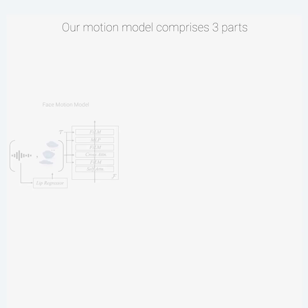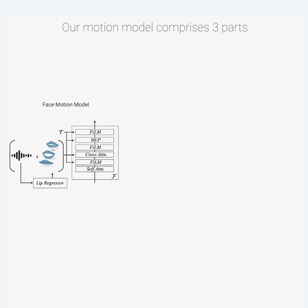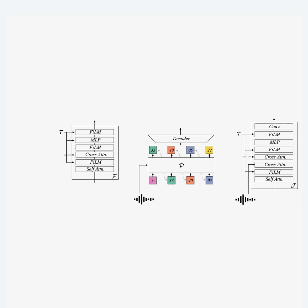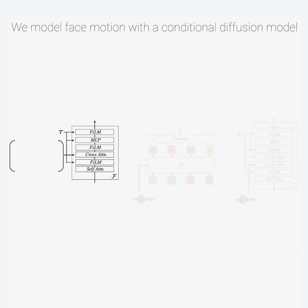In order to explore this problem setting, we capture a rich dataset of dyadic conversations that allow for photorealistic reconstructions. Our model is comprised of three parts: a face motion model, a guide pose predictor, and a pose motion model. The face motion model is a diffusion network conditioned on both the conversational audio and the outputs from a pre-trained lip regressor.